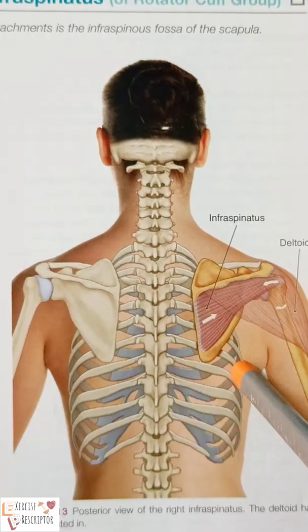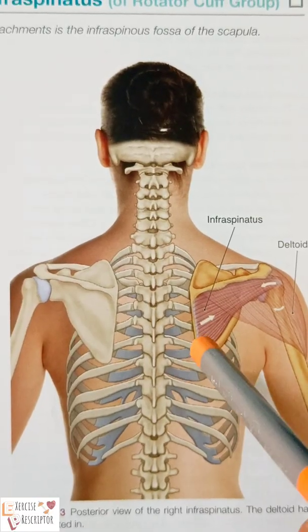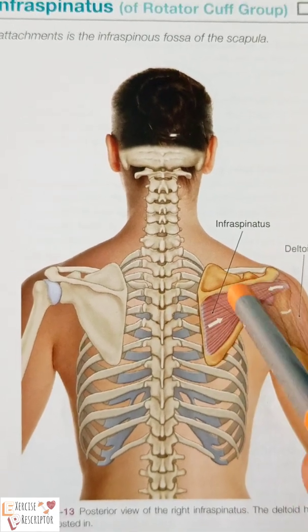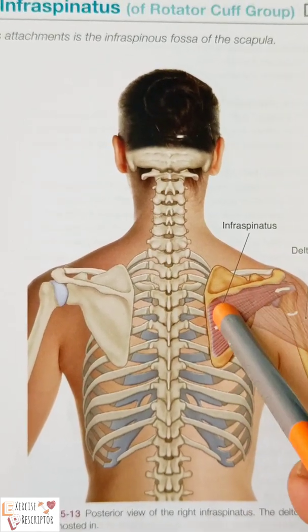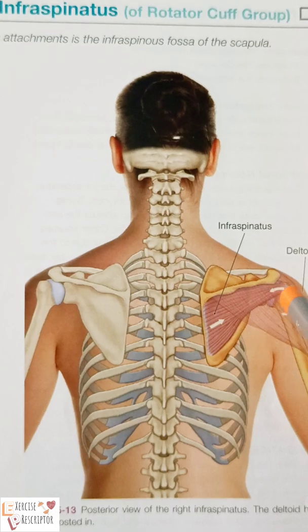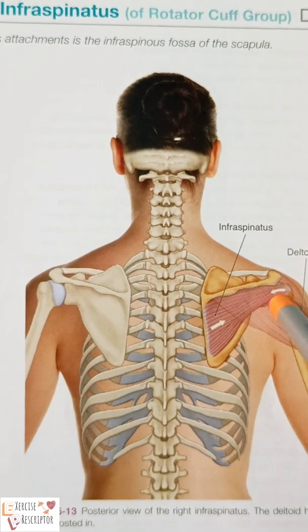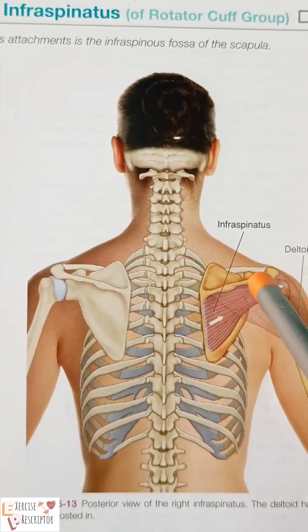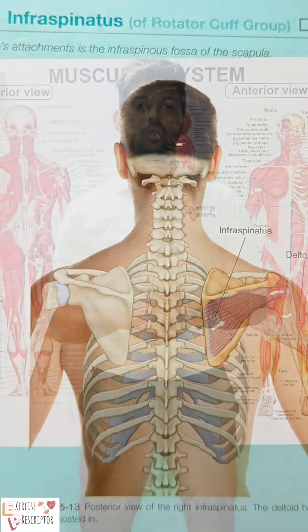This is the infraspinatus. The muscle fibers are oriented in a more horizontal manner. If muscle contraction happens, it creates the movement of external rotation of the shoulder joint.